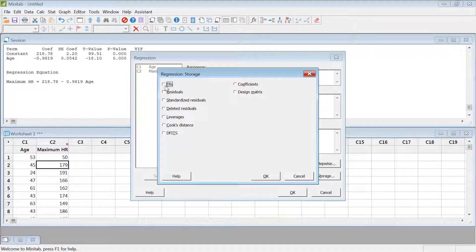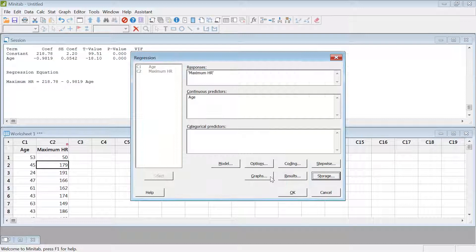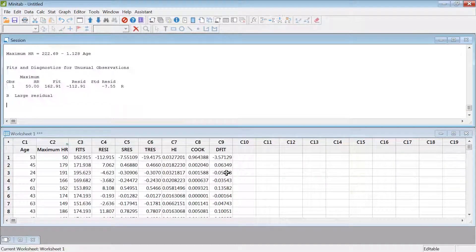I want to see the fitted value, residual, studentized, standardized residual, deleted residual. Leverage is basically the diagonal element of the hat matrix, and then cook distance and then DFFITS. That should be okay. All right.